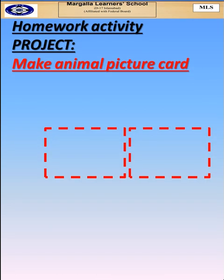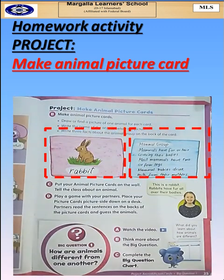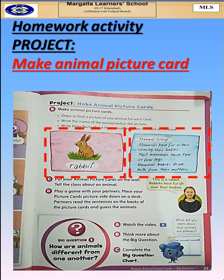Now we have a homework activity for you. You're going to make a project — make an animal picture card. This is interesting. All you need is a cardboard. You're going to paste your favorite animal picture on it, and write about your favorite animal on the opposite side. This is an easy and fun activity. You can do this with your siblings as well. You can see an example right over here.